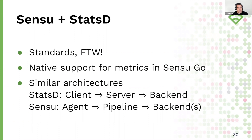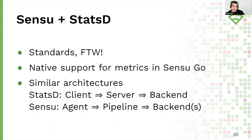We have some native support for StatsD. It used to be that you could install an extension in the Sensu agent, but now it's built into Sensu Go, along with built-in support for metrics in the Sensu event format. Sensu and StatsD work very nicely together because they share a similar architecture. With StatsD you have a client-server-backend architecture; with Sensu you have an agent-pipeline-backend architecture. The Sensu agent and pipeline together serve as that server, giving you a much richer workflow and automation capability for multi-tenant delivery of metrics collected via StatsD.